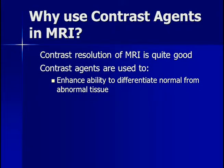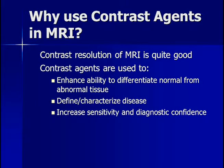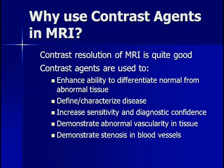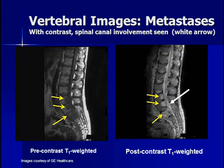Why use contrast agents in MRI when contrast resolution is already good? Contrast agents increase contrast resolution even further. They enhance the ability to differentiate normal from abnormal tissues, define and characterize lesions, increase sensitivity and diagnostic confidence, demonstrate abnormal vascularity, and can detect stenosis. For example, in a patient with metastatic disease to the spine, T1-weighted images without contrast show the vertebral bodies and very low signal intensity metastases. After gadolinium injection, the metastases are clearly visible, and abnormal signal intensity extending into the spinal canal causing cauda equina syndrome can be identified — something very difficult to determine from the unenhanced MRI.